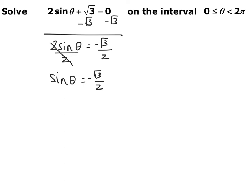Thinking about the unit circle — where between 0 and 2 pi do you have sine, which is y over r, with r equal to 1, where your y-coordinate equals negative root 3 over 2? If your y-coordinate is negative root 3 over 2, it's negative, so it's in quadrants 3 or 4. And since it's root 3 over 2, that means it's going to be an over-3. So you have either 4pi/3 or 5pi/3.